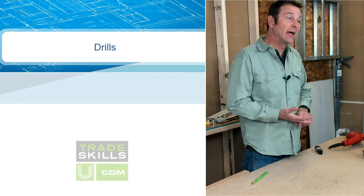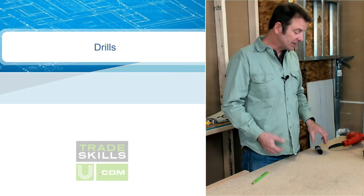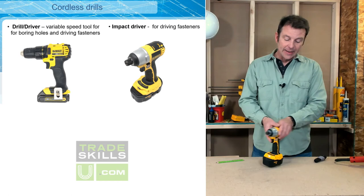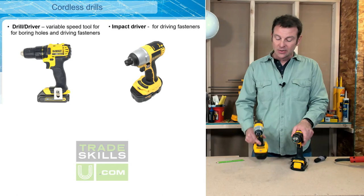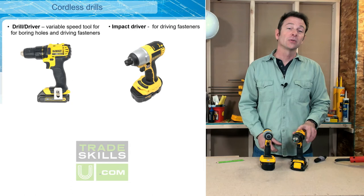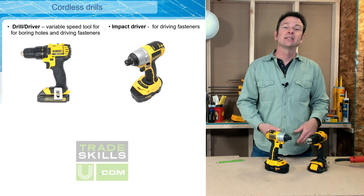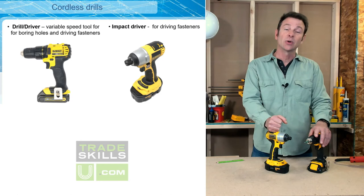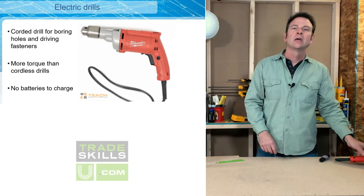There is a whole category of power tools used for two main purposes: boring holes in materials and driving and removing fasteners — we call these drills. A cordless drill and an impact driver are very similar tools. The difference is that an impact driver is specifically for driving and removing fasteners, while the cordless drill is also good for boring holes as well as fasteners. The impact driver has a special action that assists in driving fasteners, making the cordless drill the more versatile of the two.